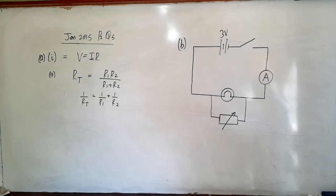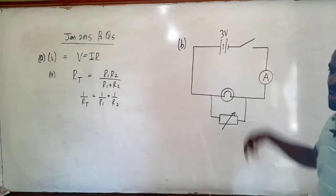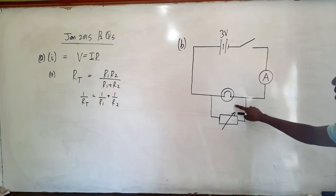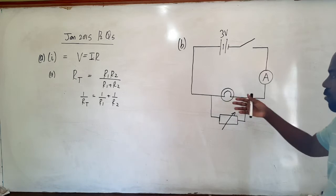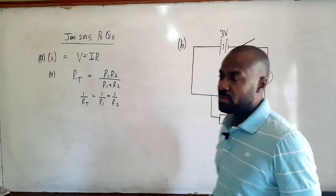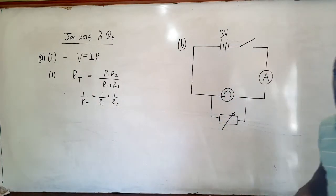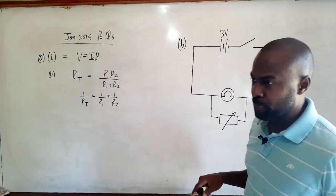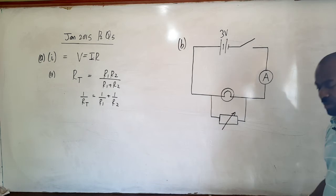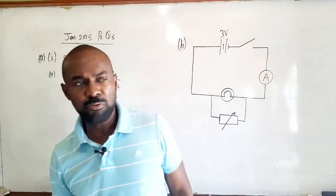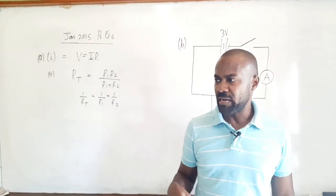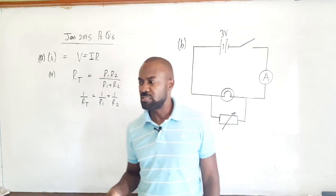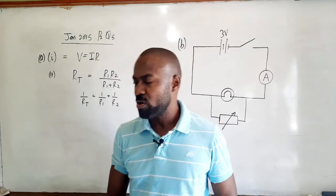Now let's look at Part B. In the circuit we have a 3-volt battery, a switch, an ammeter, a lamp, and across the lamp we have a variable resistor connected in parallel. The question states the brightness of the incandescent bulb may be increased by varying the rheostat between 0 ohms and 100 ohms. When lit, the bulb operates at 0.30 amperes and 3.0 volts — those are the ratings of the bulb.